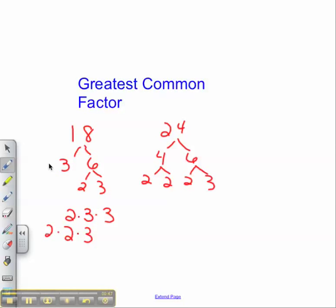The other 2's would be off to the side. You can then circle the common factors which are 2 and 3. Taking 1 from each circle, 2 times 3 gives the greatest common factor of 6.